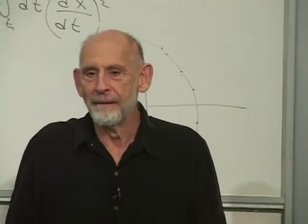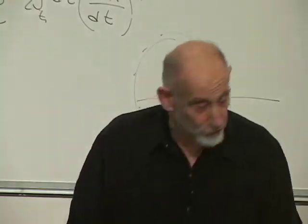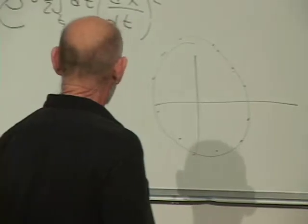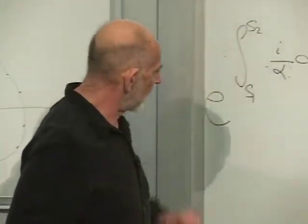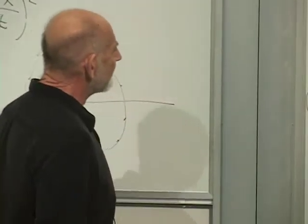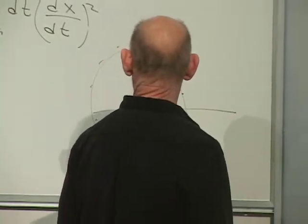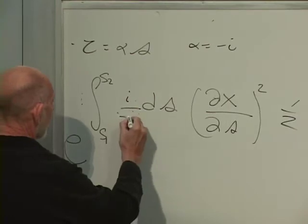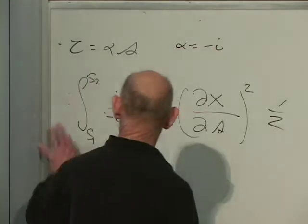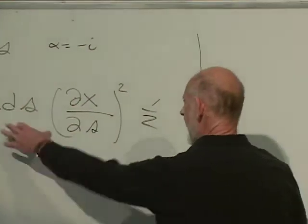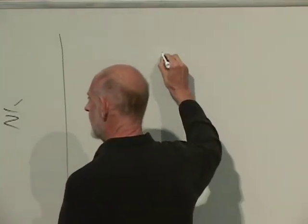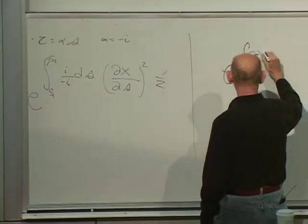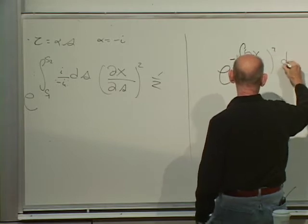Now what are we going to choose α to be? If we choose α = −i, then i/α = i/(−i) = −1, and the whole exponential magically loses its i. It becomes e to the integral of minus one-half (dx/ds)² ds. That's the key trick.